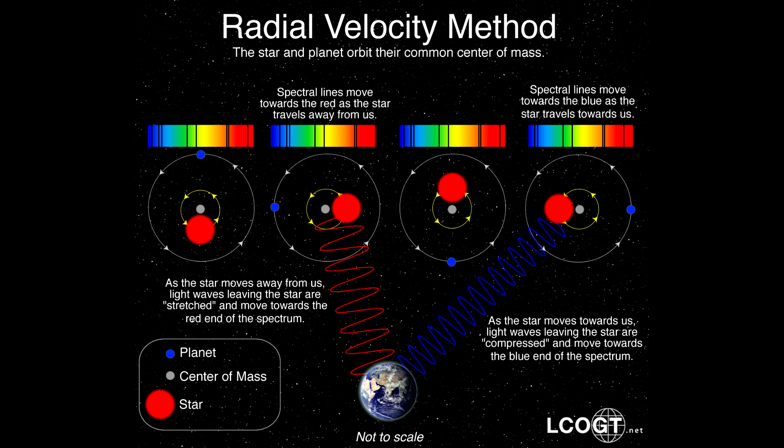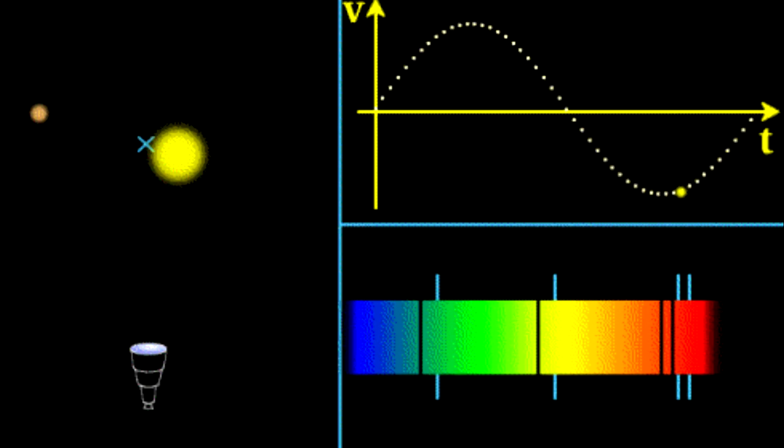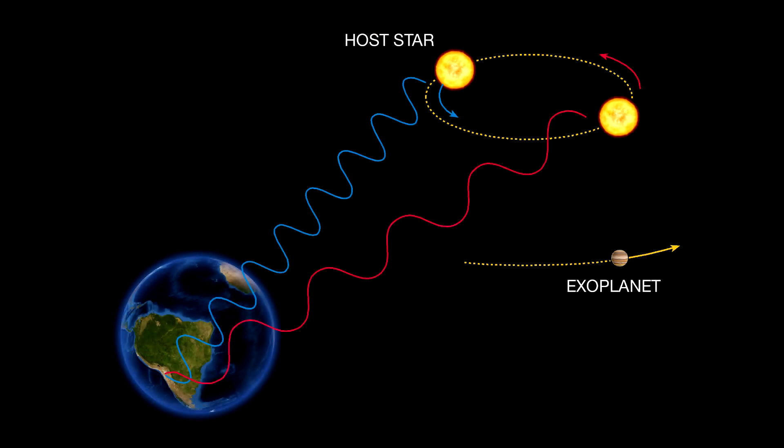Now, how can we detect that wobble? We can do it with spectroscopy and the Doppler shift. When an object is moving towards us, the light we receive is different — we can take that light apart and distinguish it from light coming from something traveling away from us. This is a property of movement, not distance. If something is wobbling, we can see a very regular, very periodic pattern where the light gets compressed and then stretched out, compressed and stretched out — showing us something moving towards us and then away from us repeatedly.